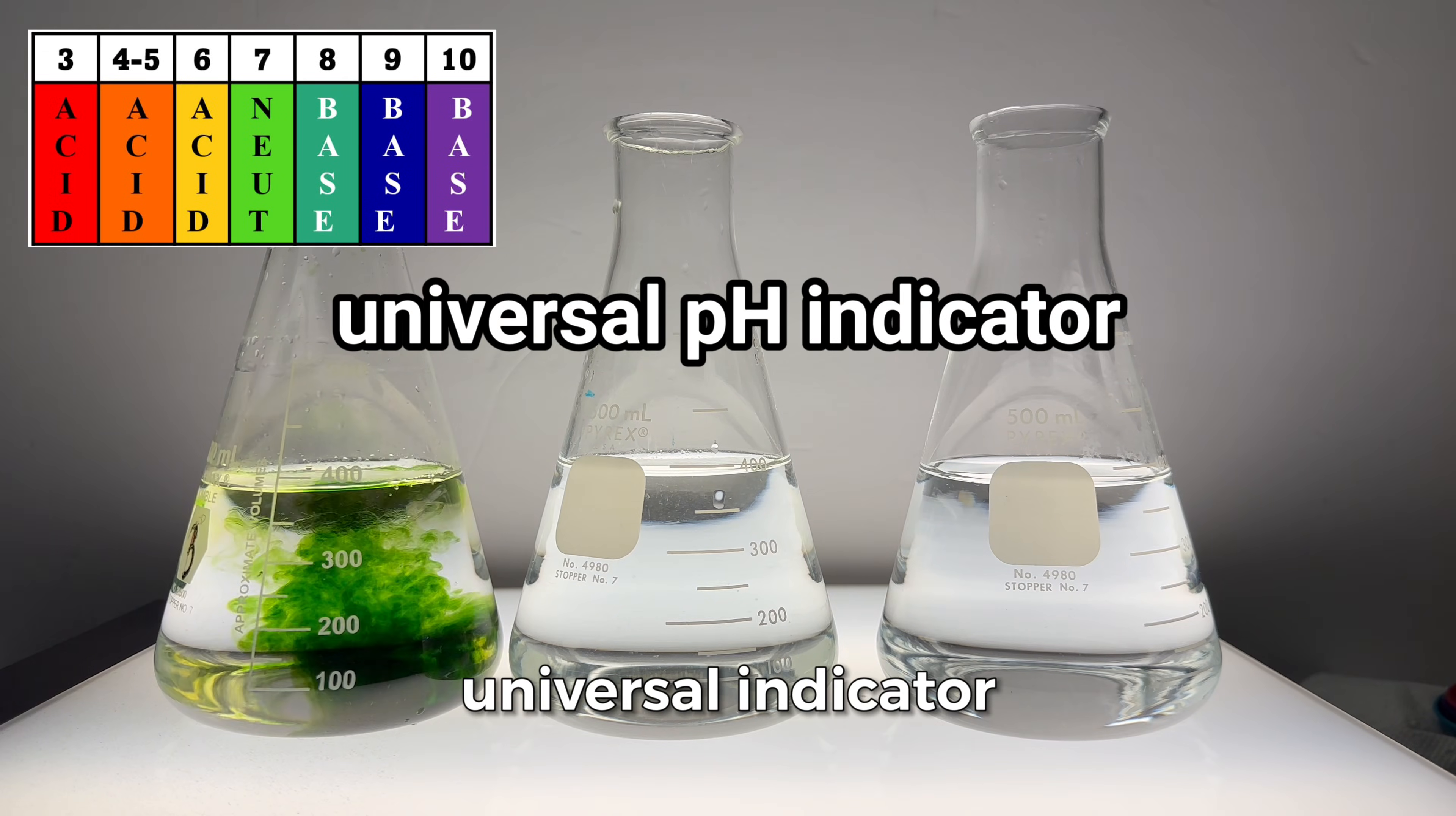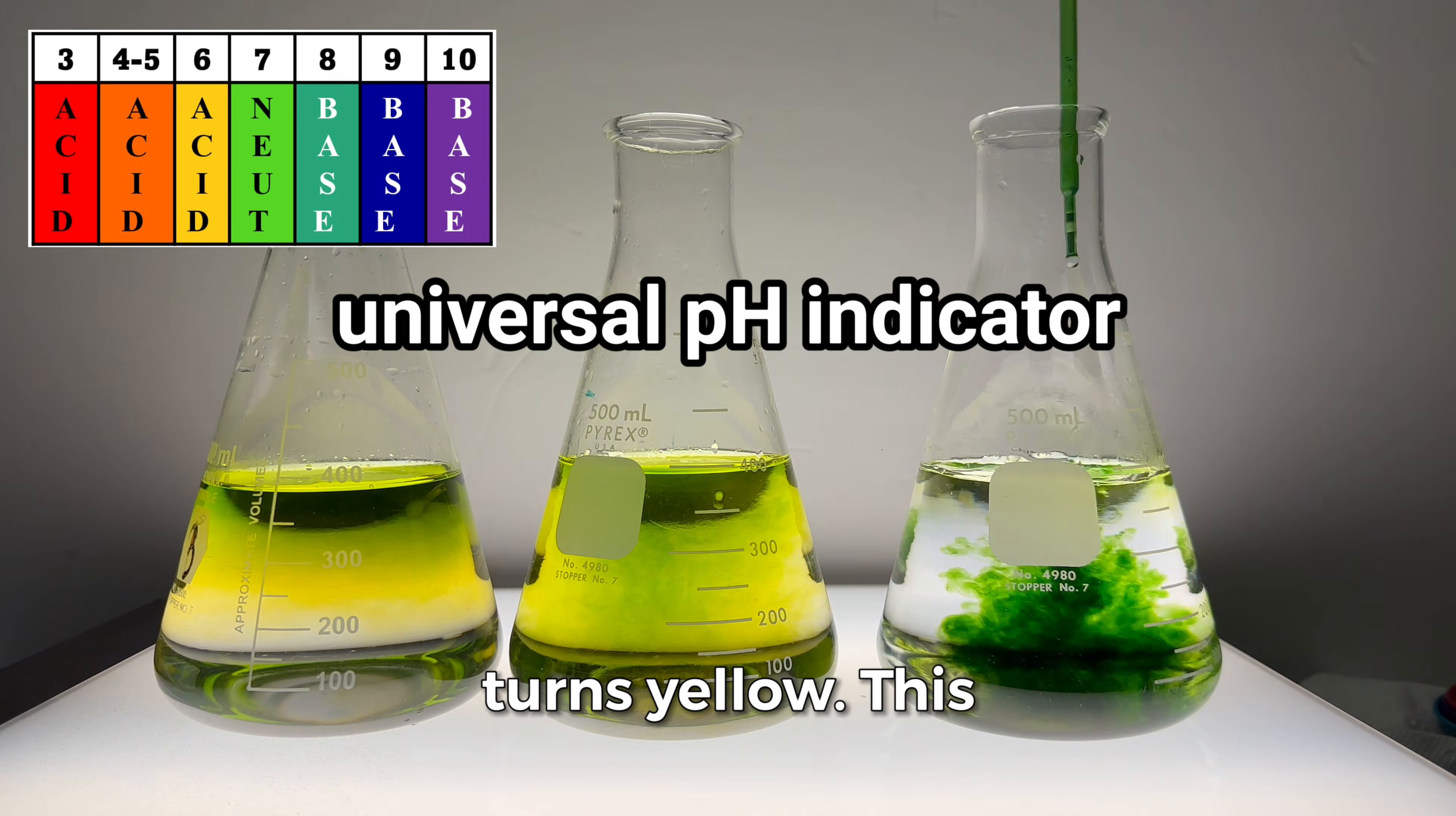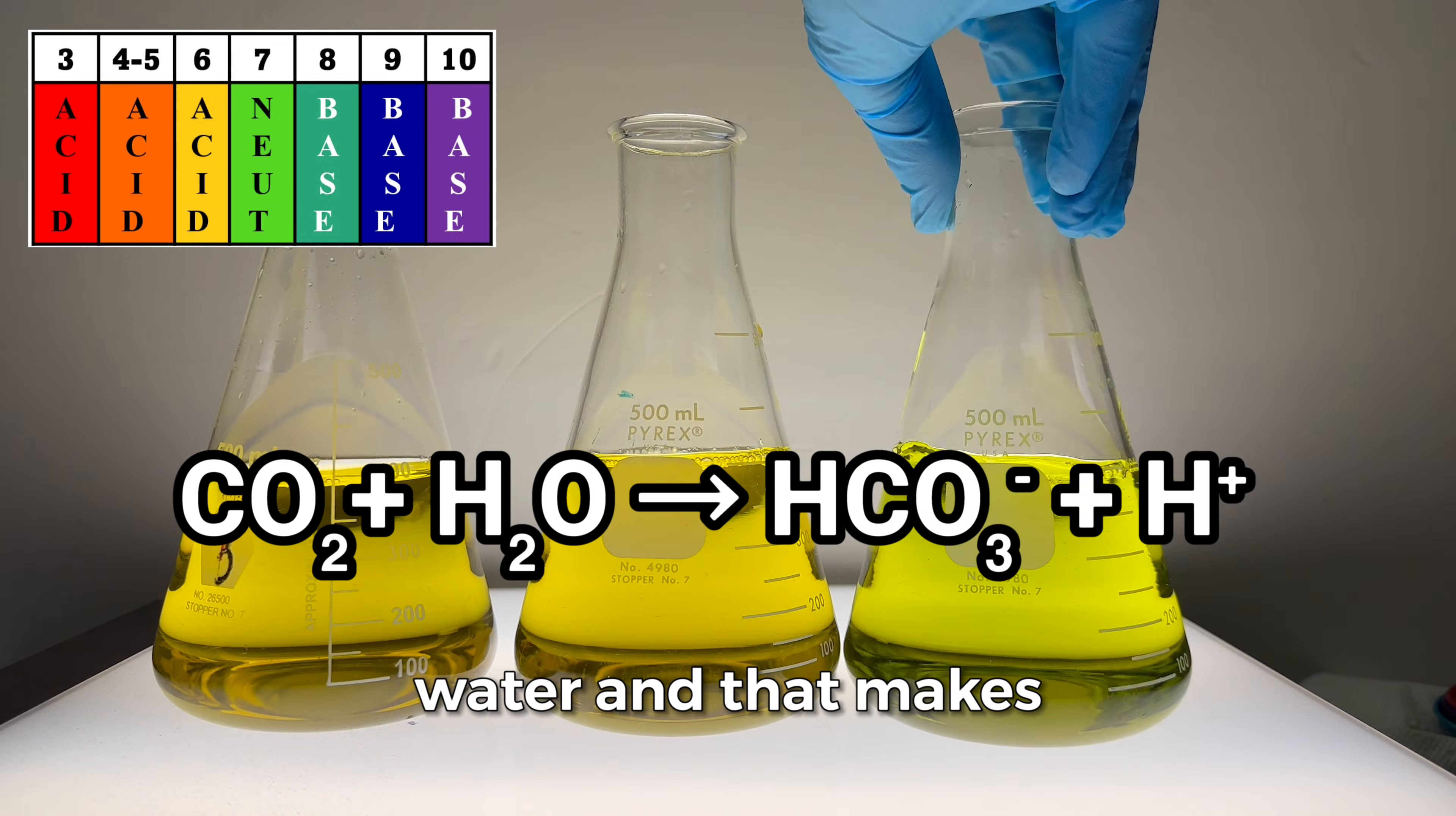Let's add universal indicator to these flasks of water. Notice the color turns yellow. This tells us the water is slightly acidic. The acidity comes from carbon dioxide in the air dissolving into the water, and that makes it acidic.